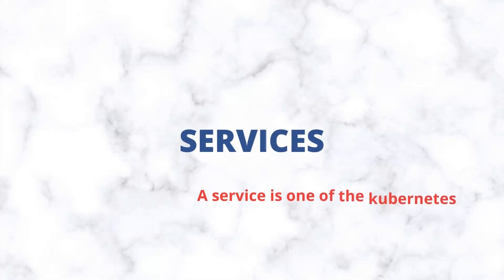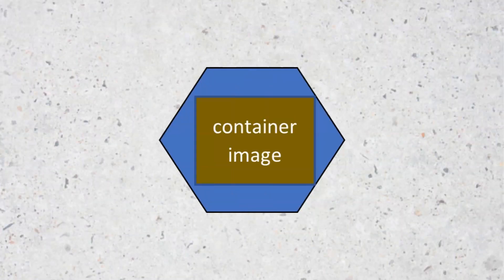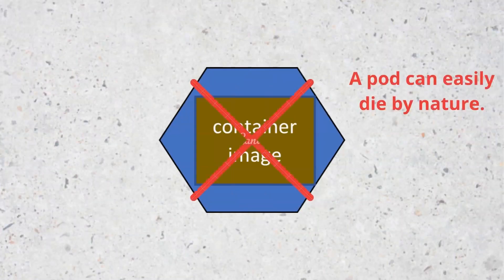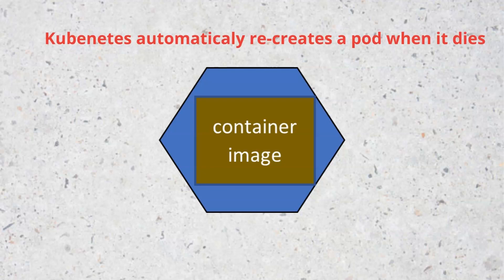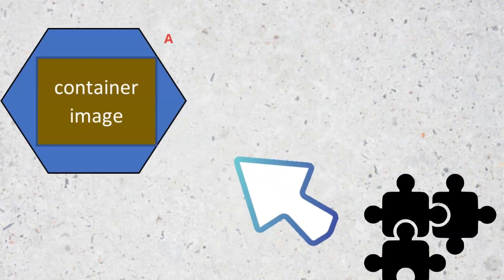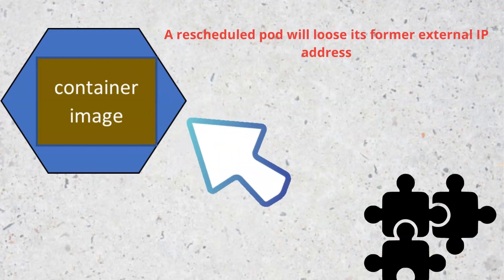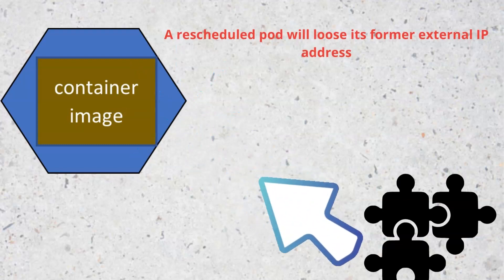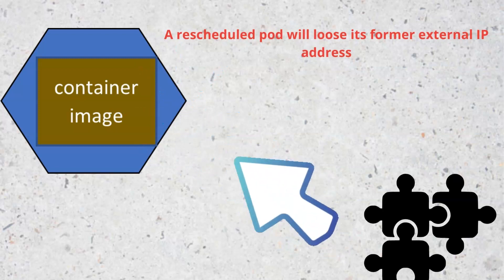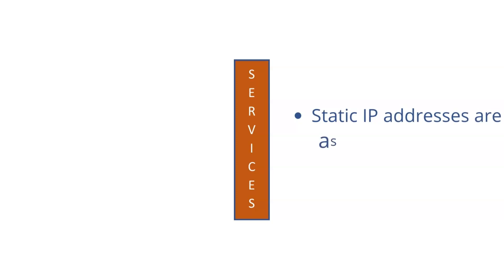The other Kubernetes object to talk about is services. Because pods are ephemeral by nature, meaning a pod can die at any time, and when it dies it takes its IP addresses with it. When the pod is rescheduled and recreated automatically by Kubernetes, the pod loses its static IP. Hence, other components or applications meant to communicate with the pod will not find the IP addresses and will not be able to talk to the pod.